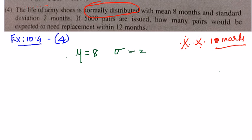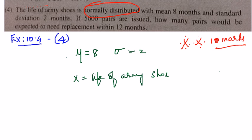If 5000 pairs are issued, how many pairs would be expected to need replacement within 12 months? Let x denote the life of the army shoes. We need to find the probability of the number of shoes that would need replacement within 12 months — that is, before 12 months, so less than 12 months.